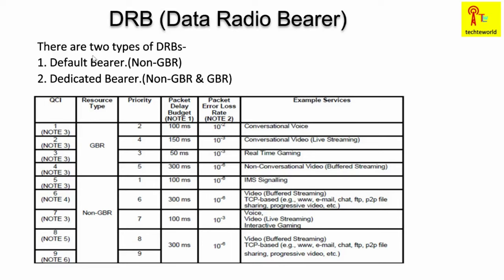The second type of radio bearer is the DRB — Data Radio Bearer. The DRB carries data messages; all data-related messages go through the DRB. The DRB is of two types: the default radio bearer, which is non-GBR (non-guaranteed bit rate), and the dedicated bearer, which can be both non-GBR and GBR. In the diagram, these are divided into two resource types: GBR and non-GBR, each with different QCI values and different priorities.